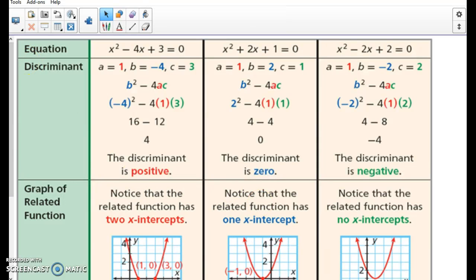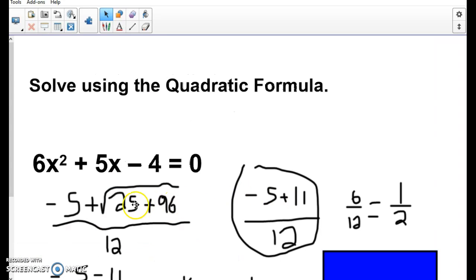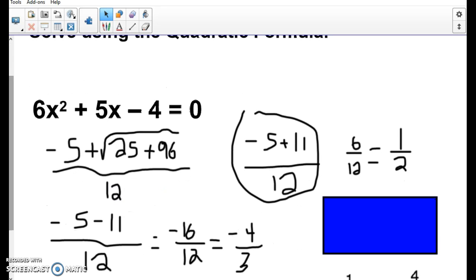So what I'm talking about is looking back at that one problem that we just did. If I would have gotten 121 like I did here, that means I know I'm going to have two solutions. If I would have gotten something like zero, I know I'm only going to have one solution because me adding zero and me subtracting zero are going to have the same effect. So it's not going to change my one answer.